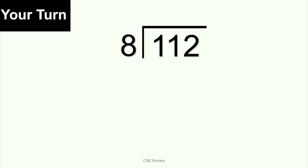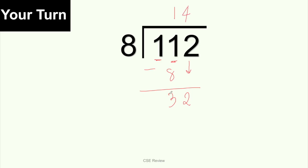Alright, let's divide 112 by 8. Following the same process: 1 cannot be divided by 8 because 1 is smaller than 8, so we take the next number — making it 11. 11 divided by 8 is 1. You have one 8, so subtract: 11 minus 8 is 3. Then bring down the next number, which is 2, making it 32. 32 divided by 8: 8, 16, 24, 32 — that gives you 4. 4 times 8 is 32. Subtract 32 and you have no remainder. So the final answer is 14.